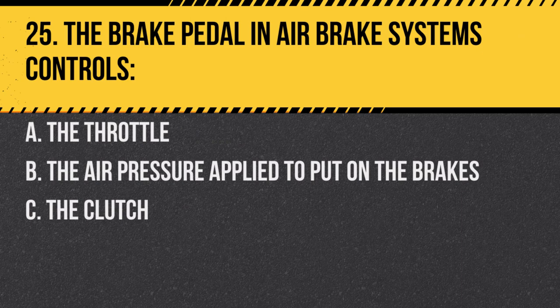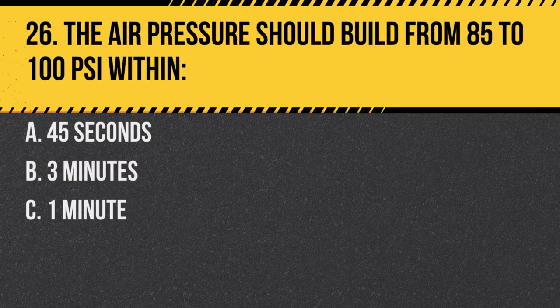Question 25. The brake pedal in an air brake system controls: A. The throttle. B. The air pressure applied to put on the brakes. C. The clutch. Answer B. The air pressure applied to put on the brakes. It determines the force of the brake application.